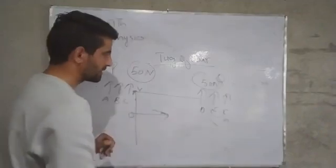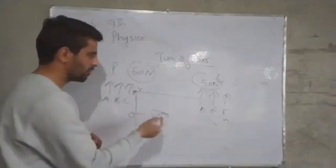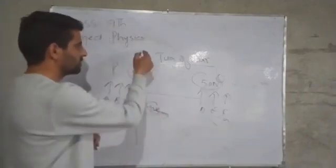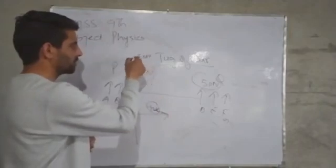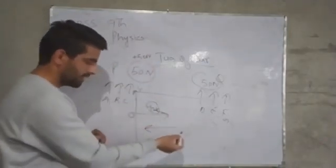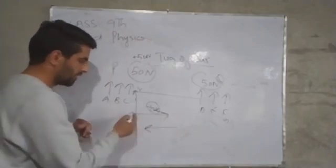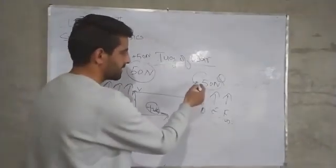In the positive direction of x-axis I am taking the forces as positive. Then this will be plus 50 N. And the forces I am taking in the negative direction of this x-axis as negative.